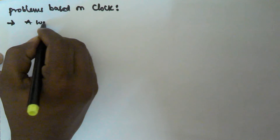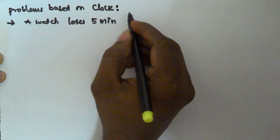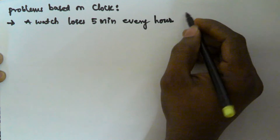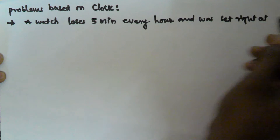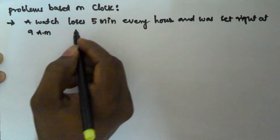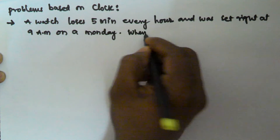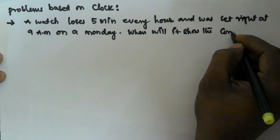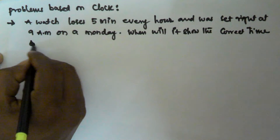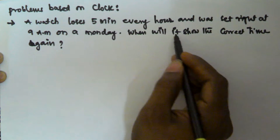Hello friends. In this video we will see another problem based on the clock. A watch loses 5 minutes in every hour and was set right at 9 am on a Monday. When will it show the correct time again?